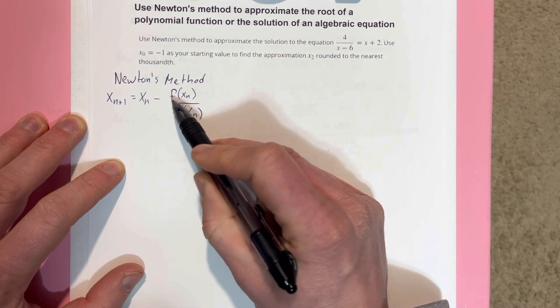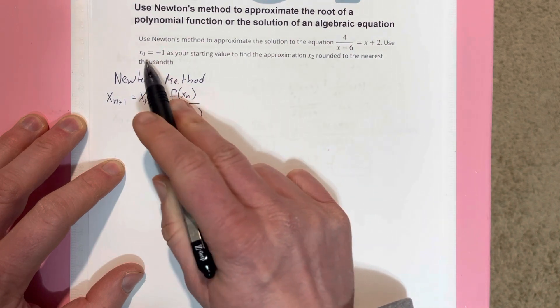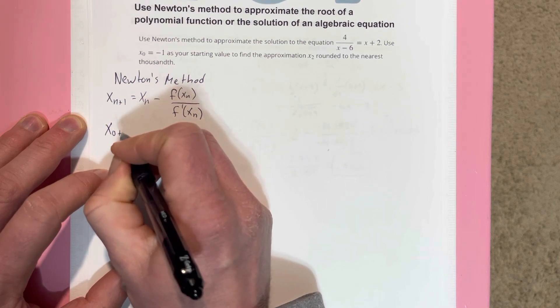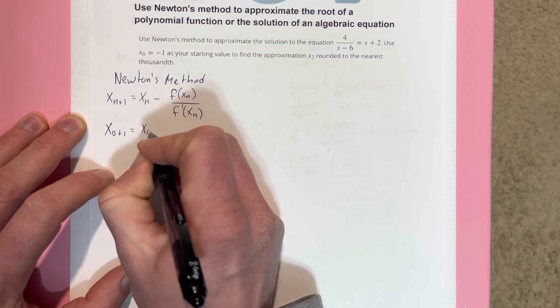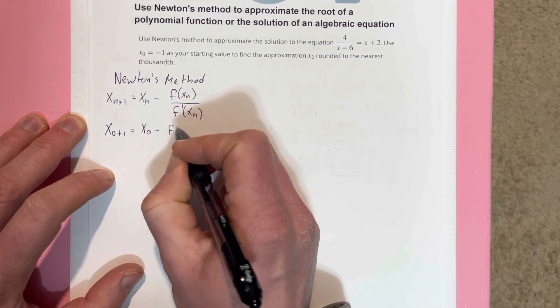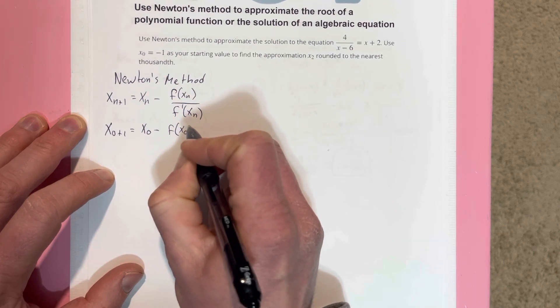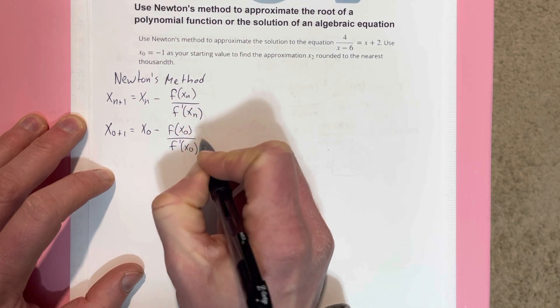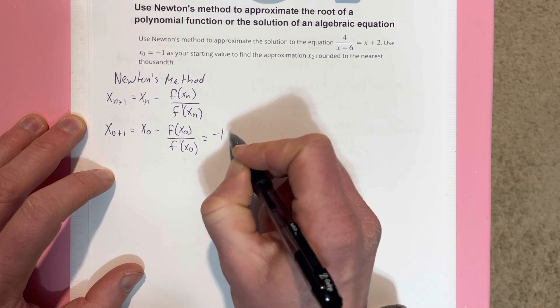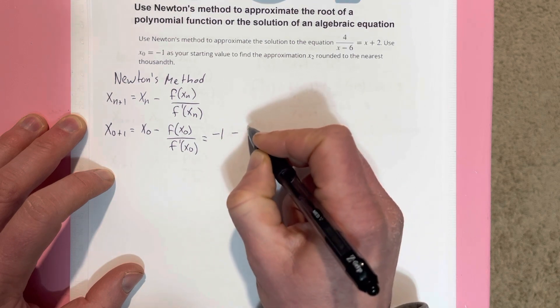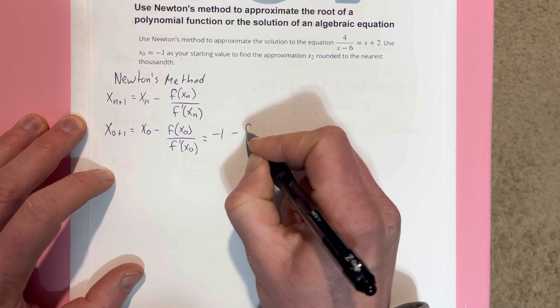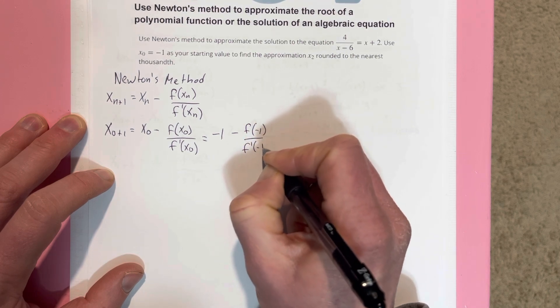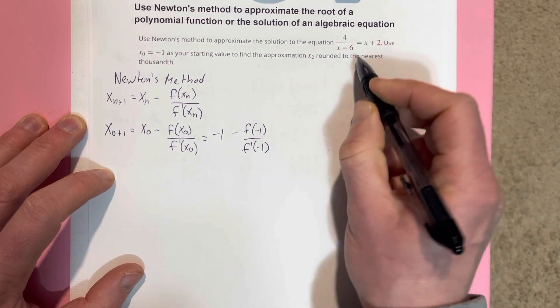What we want to do first is we want to figure out what's the function here. We know x₀ is negative 1. So x₁ is equal to x₀ minus f(x₀) over f'(x₀), which tells us that we have negative 1 minus f(-1) over f'(-1). But we need to figure out what is f(x).